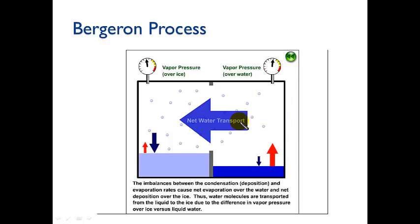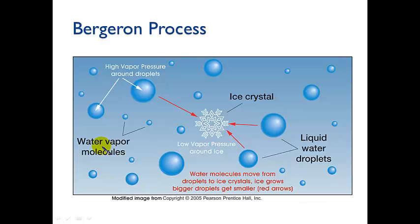So essentially we're having evaporation of the droplets and deposition or growth of the ice crystals. So we've got a net water transport from the droplets to the ice crystals and an increase in the size of the ice crystals. So to illustrate the Bergeron process, we have this high vapor pressure around the droplets and we have this net movement to the low vapor pressure region around the ice and so the ice crystal grows and the water droplets shrink.